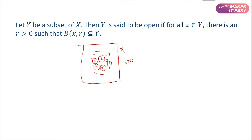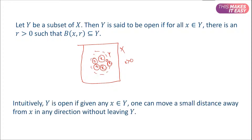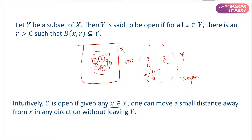Intuitively, Y is open if for any x that is an element of Y, we can move a small distance away from x in any direction without leaving the set Y. Then set Y is called open. So we have defined what an open set is — it is the set which doesn't include the boundary points.